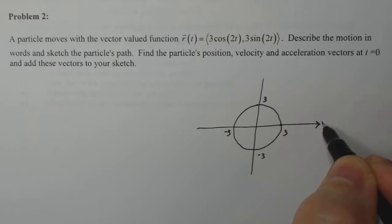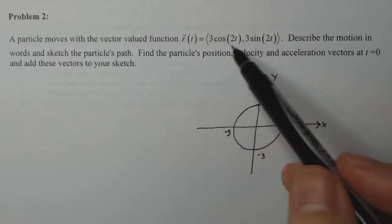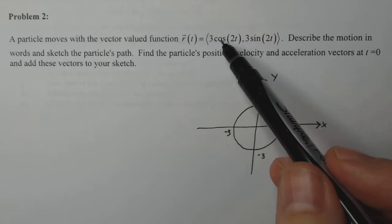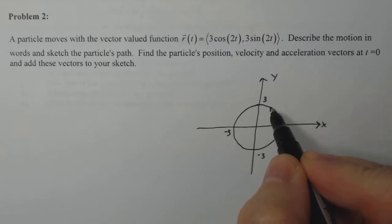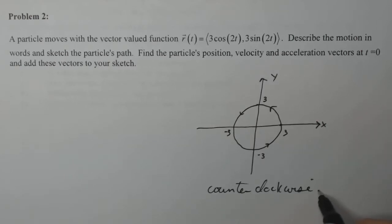Now I also know that it's going to be going counterclockwise, because there's no negatives in here and cosine is in the x position. So it's counterclockwise uniform circular motion.